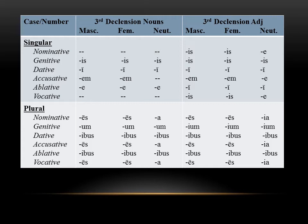Now if we compare third declension adjectives to third declension nouns, we can start to see the pattern. The noun side should look familiar — it's the pattern for third declension nouns we've been dealing with throughout the book. Comparing it to the adjectives, you'll notice some subtle differences. For the masculine and feminine chart, the endings are mostly the same, except in the nominative case there is a set pattern for adjectives. For nouns, we put a dash because there's no set predictable pattern, but with adjectives it's always going to be that short IS in the masculine and feminine.